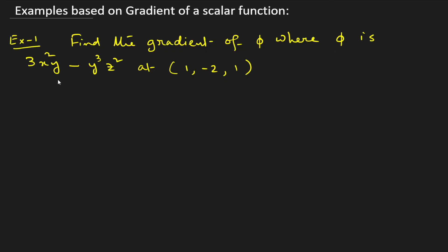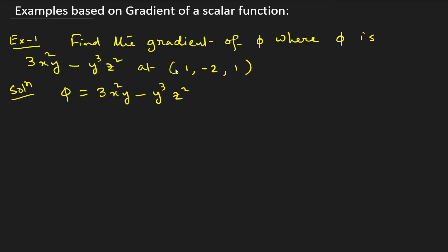Now let's see the first problem: find the gradient of φ. Here φ is a scalar function given as φ = 3x²y − y³z². We need to find the gradient of φ at the point (1, −2, 1), so x = 1, y = −2, and z = 1.